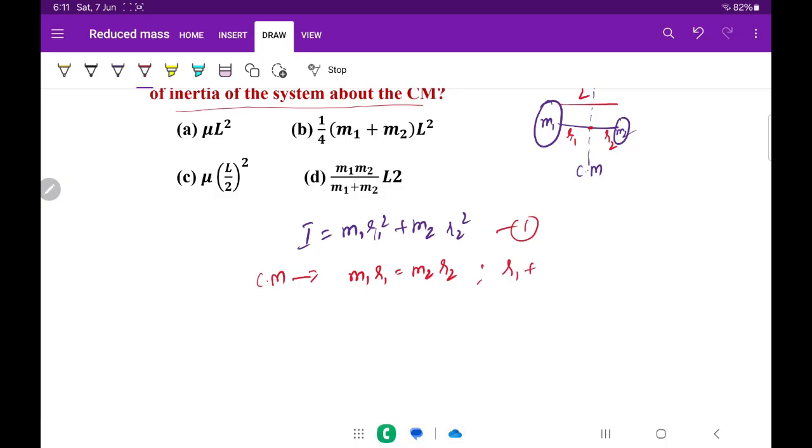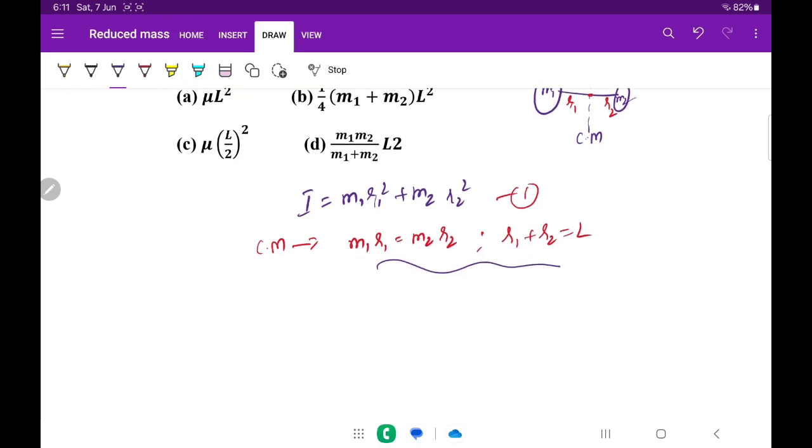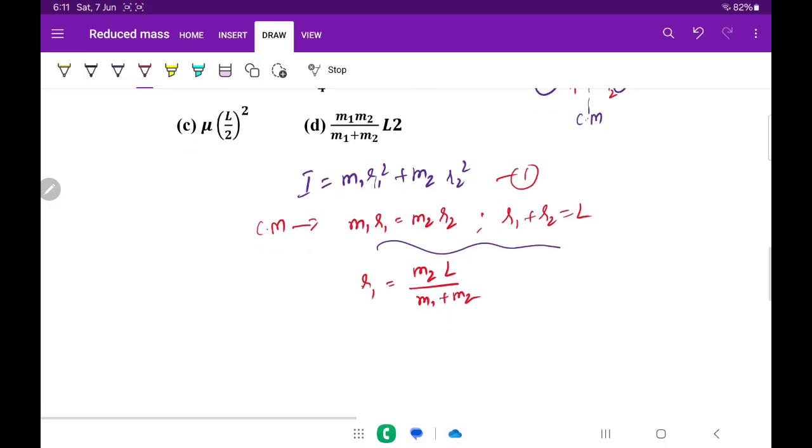We also know that r1 plus r2 equals L. Now let us solve these two equations. If you solve them, we can directly get r1 equals m2 L divided by m1 plus m2. Here L is length, don't confuse that L is angular momentum, it's not angular momentum, it is length only. And r2 equals m1 L divided by m1 plus m2.